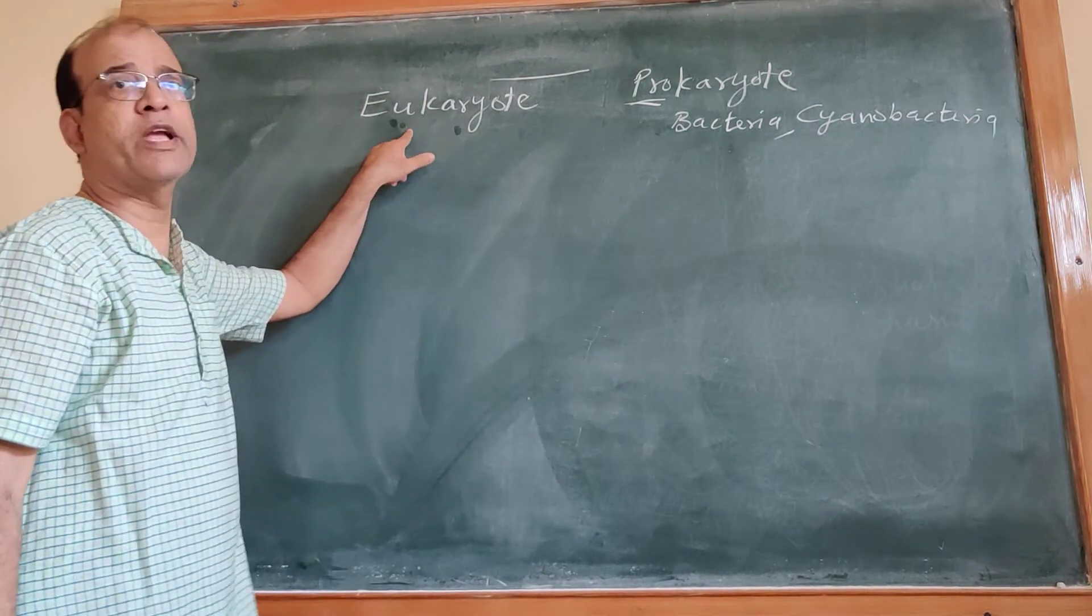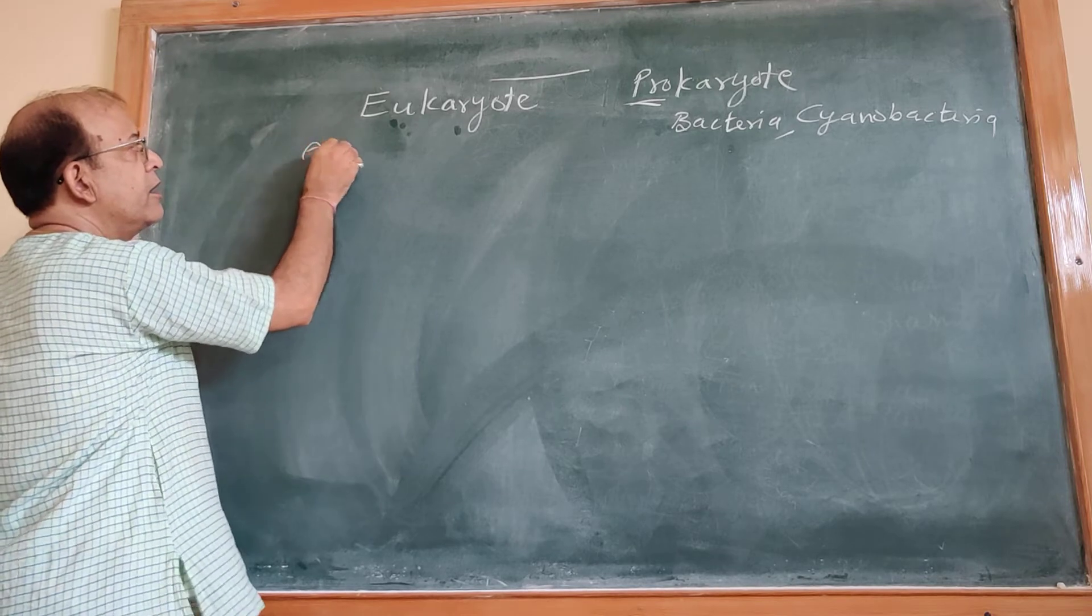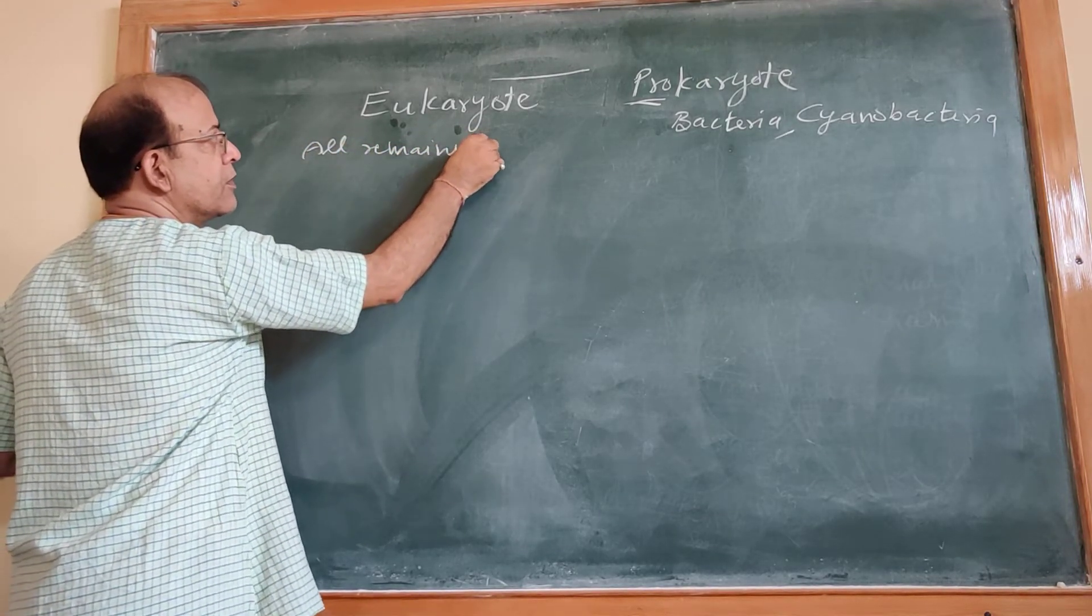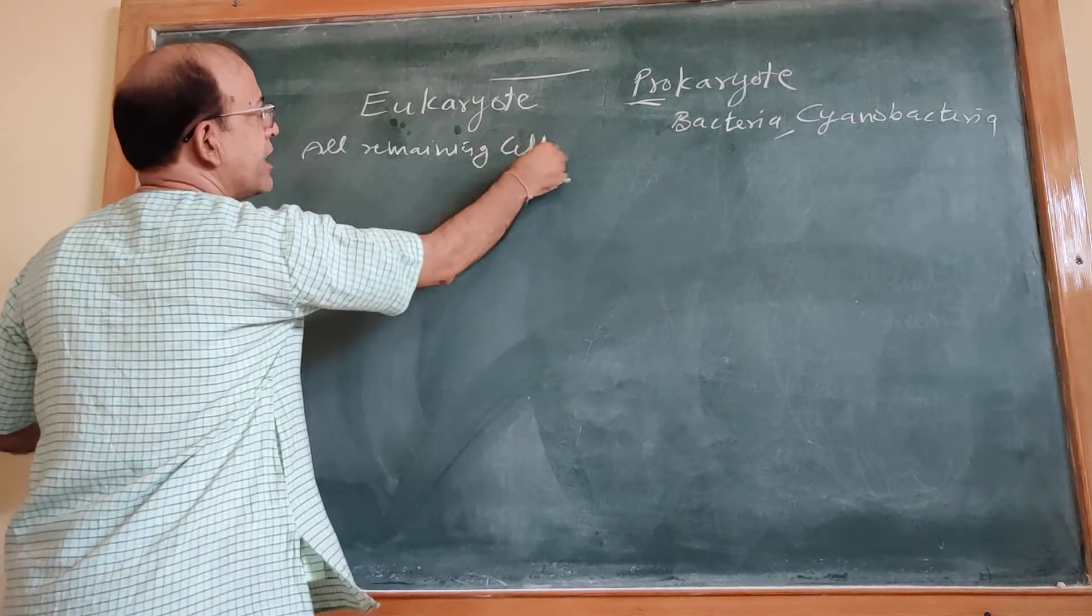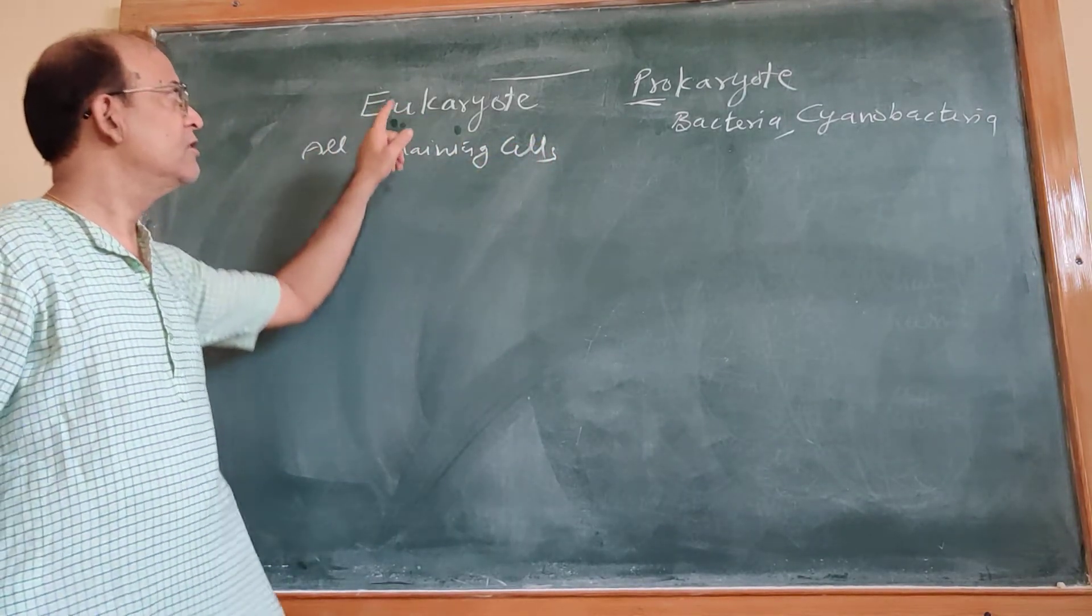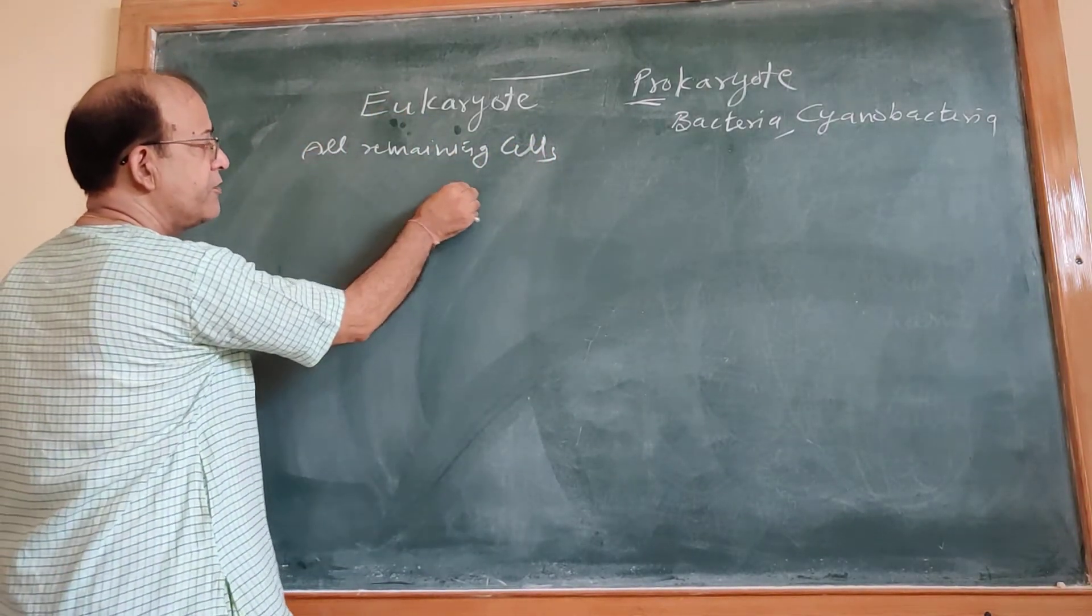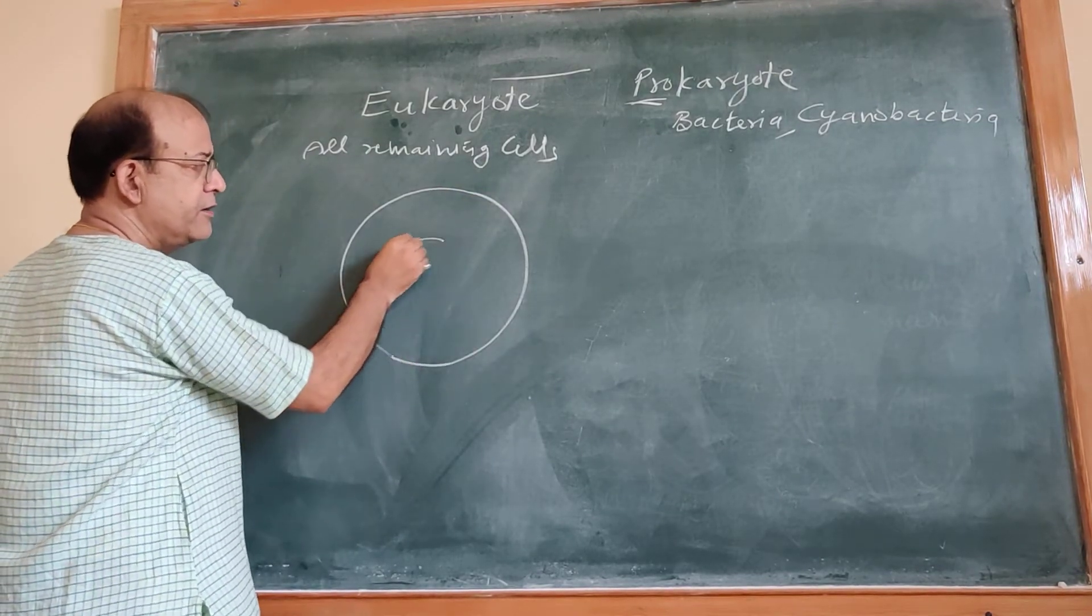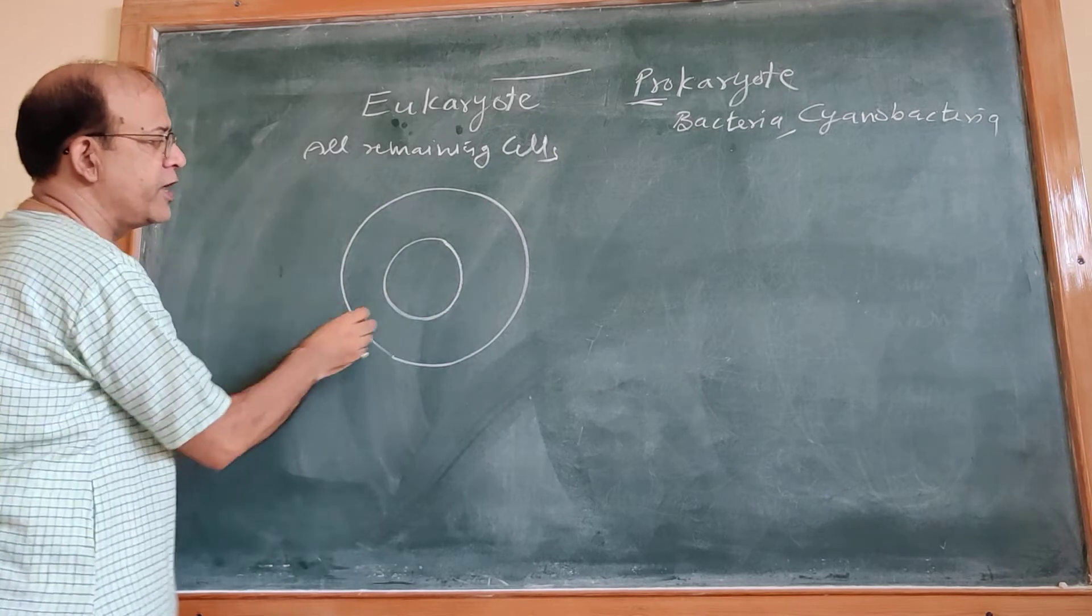Whereas eukaryote are all remaining cells. All remaining cells are eukaryote. These eukaryotes have well-defined boundary. Inside, this is well-defined nuclear membrane.